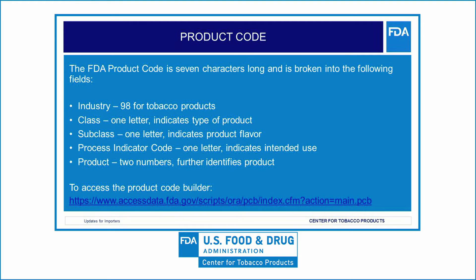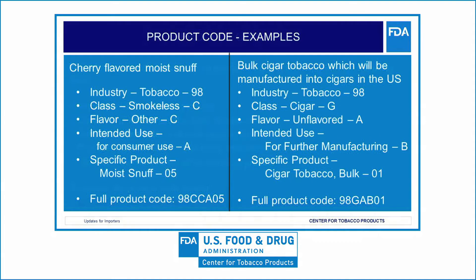Product: the final two characters of the FDA product code; for tobacco products, the product code helps further identify the specific product. The product code builder is an online tool which can assist in locating and building a product code. On this slide, you can see two examples of product codes.